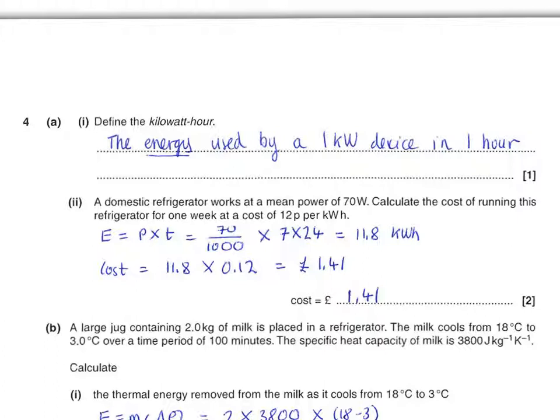Then it carries on, again still in a synoptic sense. A domestic refrigerator works at mean power of 70 watts—calculate the cost of running this refrigerator for a week. So we've got to calculate first of all the energy: power times time. The energy in kilowatts is 70 divided by 1000, and the time in hours is 7 days times 24 hours. We get to 11.8 kilowatt-hours, and then simply multiply that by the cost of each kilowatt-hour, 0.12 pounds. We're after the cost in pounds, so we get to £1.41.